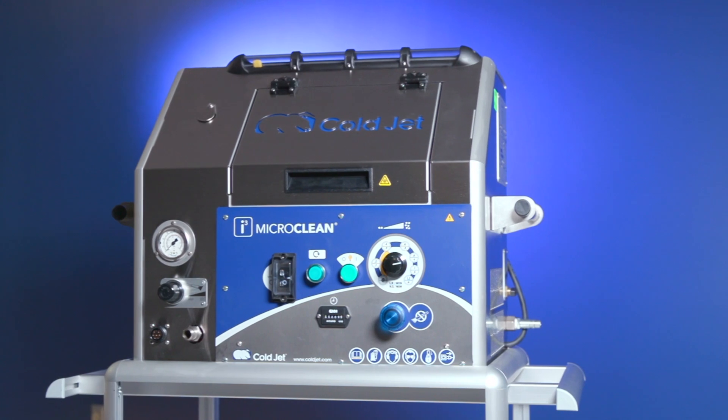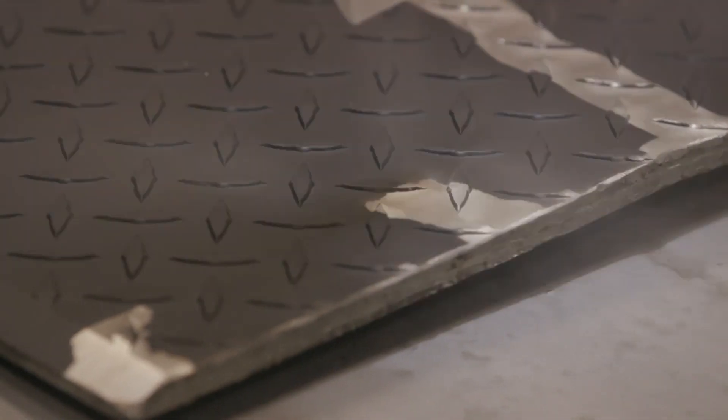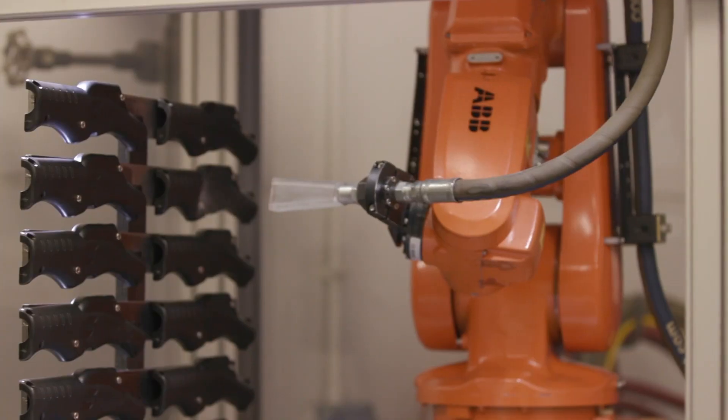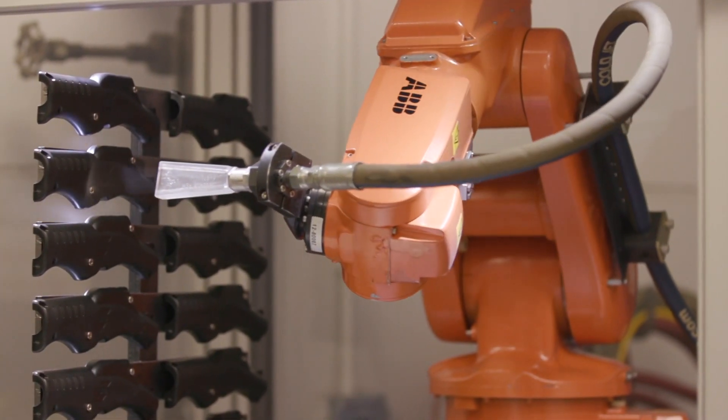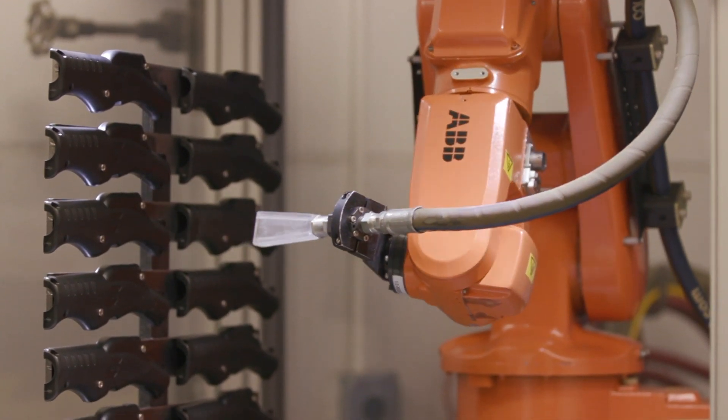Traditionally, we have portable units that are taken to the equipment to be cleaned. In modern times, as things become automated, we are starting to integrate more of our systems into production lines to still provide a cleaning in place solution, but in an automated way.